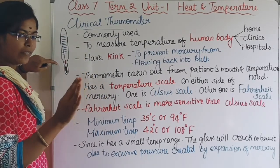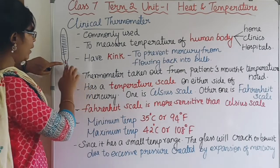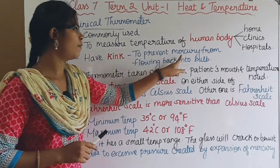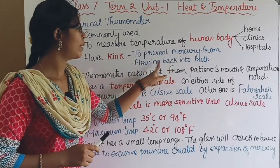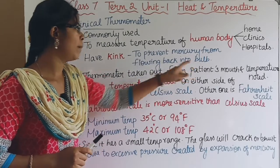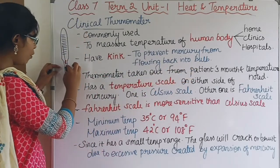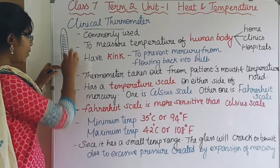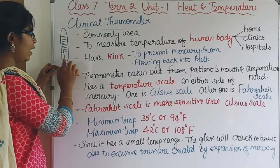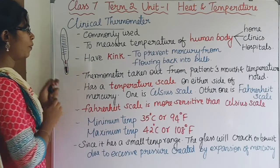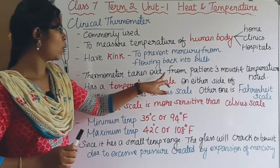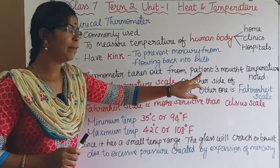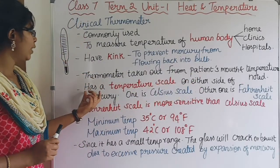When the temperature in the human body changes, if the thermometer falls, there will be a kink present. It will prevent the mercury from flowing back into the bulb. This is the bulb of mercury. If it falls, there will be a kink. The thermometer is taken out from the patient's mouth and the temperature is noted.